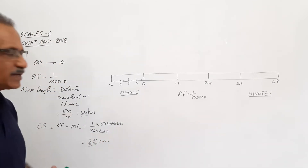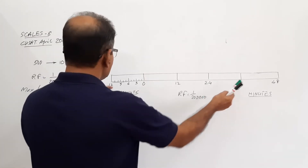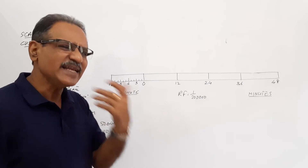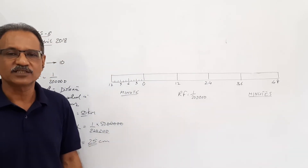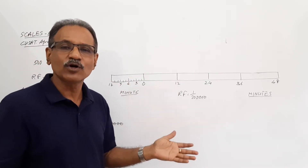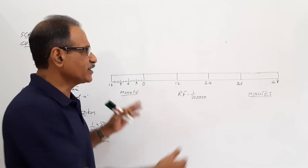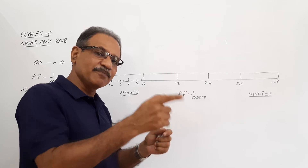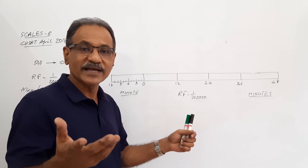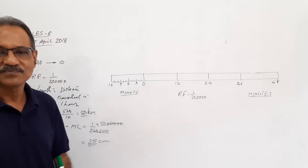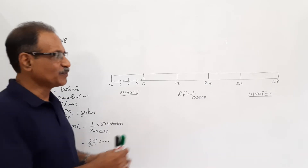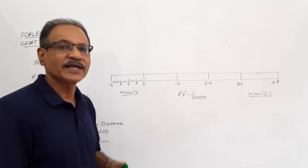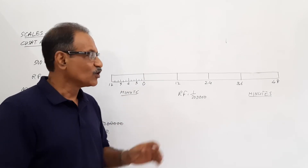Now the construction of the scale is complete. Where is 46 minutes? 36 plus 10 equals 46. You can show 46 minutes here. But you don't have any idea about the distance traveled in 46 minutes. You can show 46 minutes, but there is no idea about how much the distance is. You would have to measure it in centimeters and then multiply it with RF to find the distance.